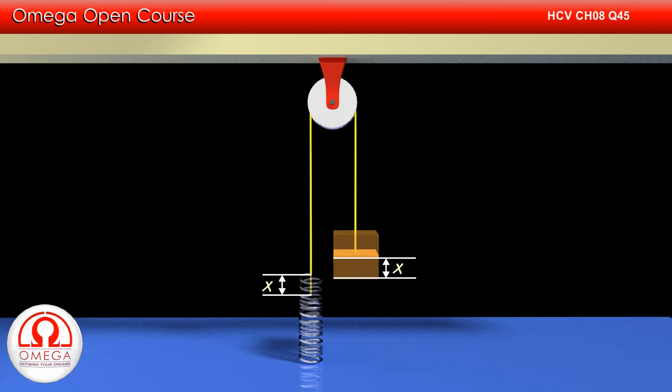Also, both the initial and the final speed of the block is zero. So there is no kinetic energy in the block. This means the spring potential energy gained by this spring must have been provided by the decrease in the gravitational potential energy of the system.